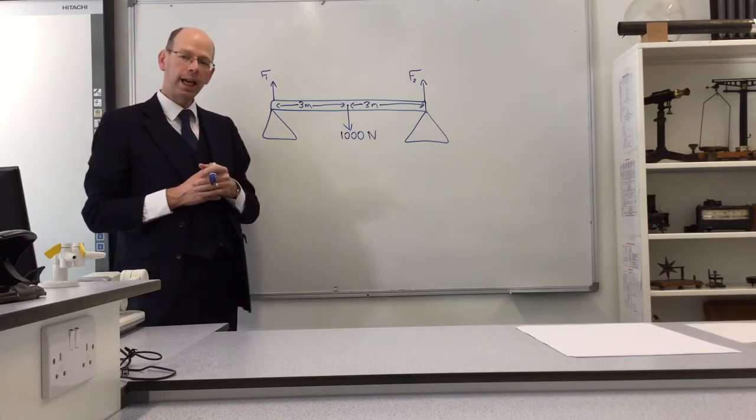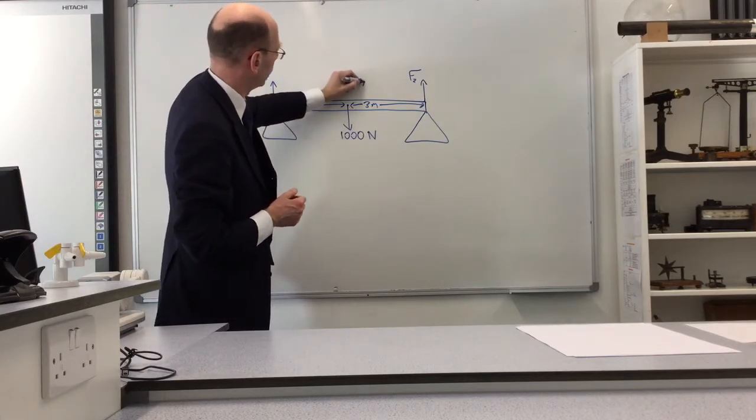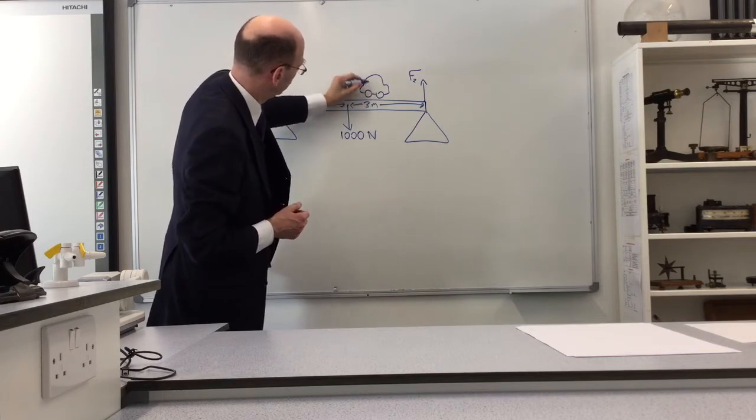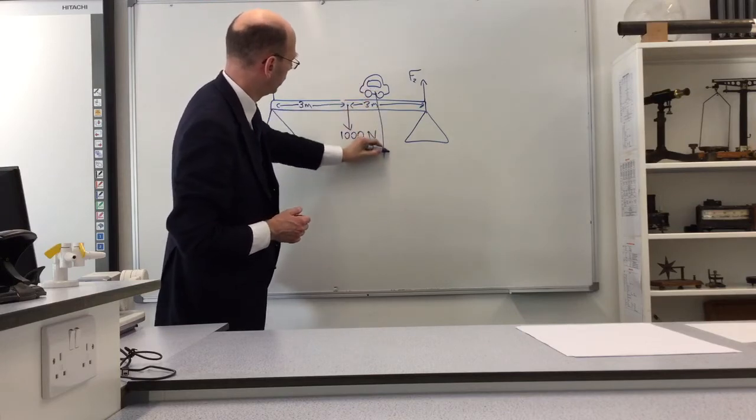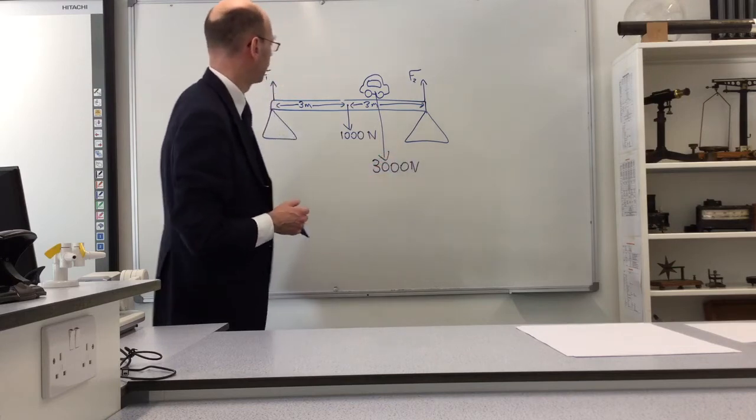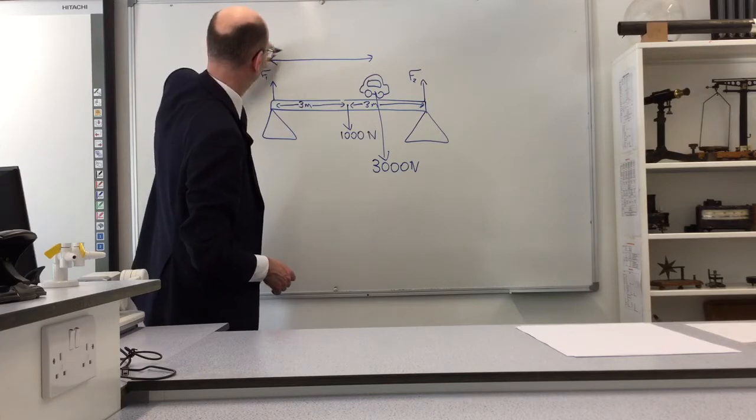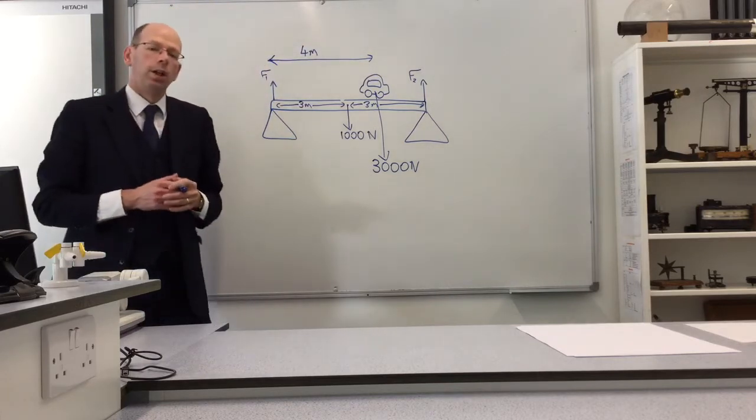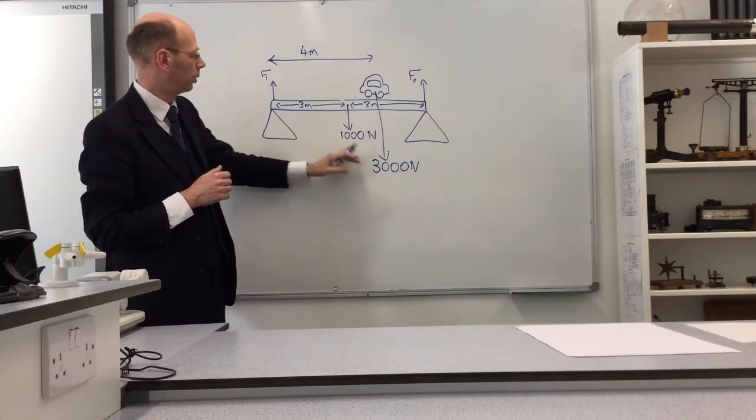But let's add a little complication to our story. Let's imagine that somebody comes driving along in a car. So we're going to have a car on the bridge. And the car, which for the sake of argument might be, say, 3000 newtons, isn't in the middle. Let's suppose that it's 4 meters across the bridge there. What's going to happen now?